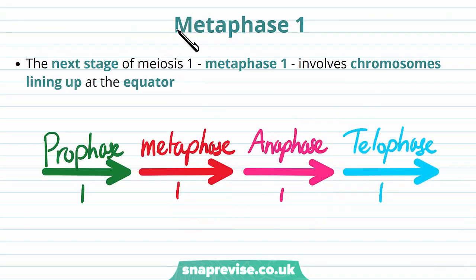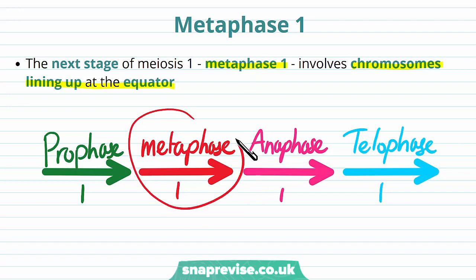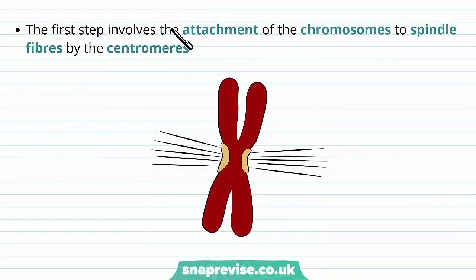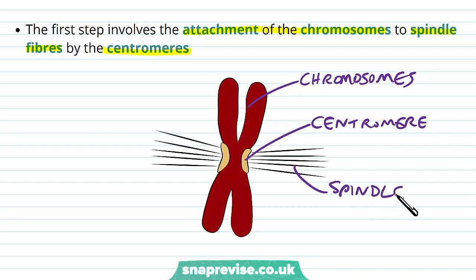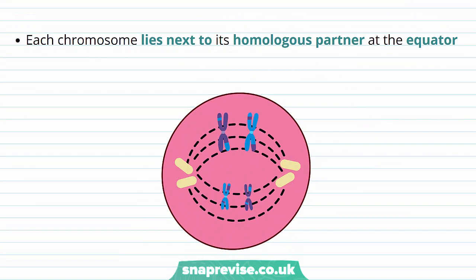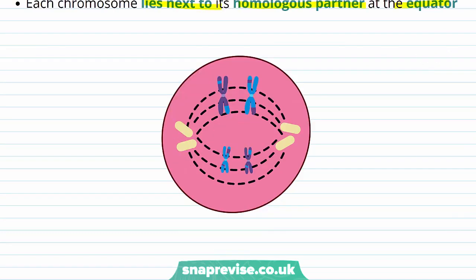Back in meiosis 1, the next stage is metaphase 1, where chromosomes line up at the equator — again very similar to the metaphase stage of mitosis. The first step involves attachment of the chromosomes to the spindle fibres made by the centrioles, and they attach at the central point known as the centromere. The spindle fibres attach at the centromere to start moving the chromosome back and forth. Each chromosome lies next to its homologous partner at the equator, and it is really important that they remain lined up. With 23 pairs of chromosomes in the human body, pair 1 lines up together, pair 2 lines up together, and so on.